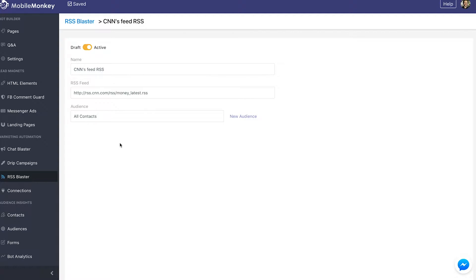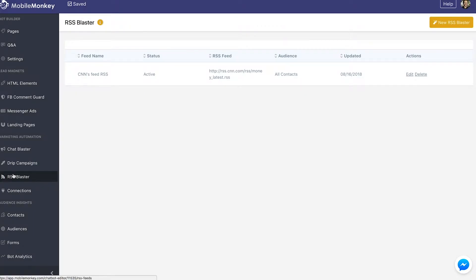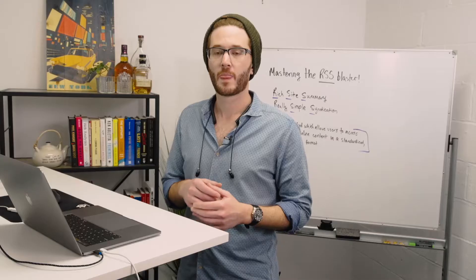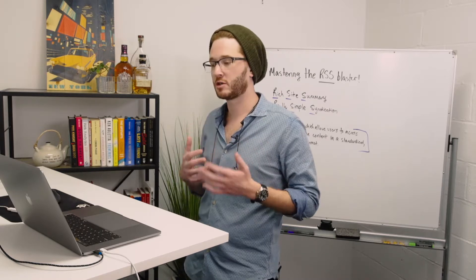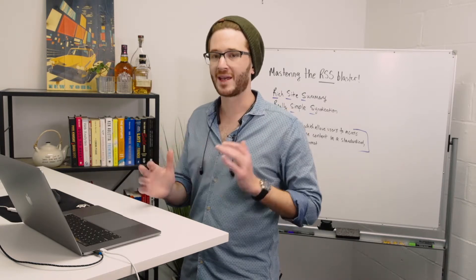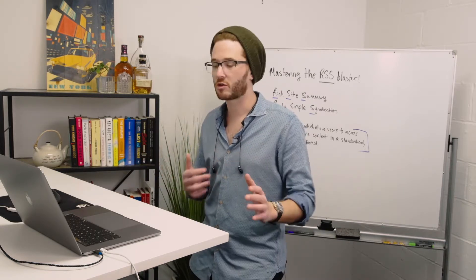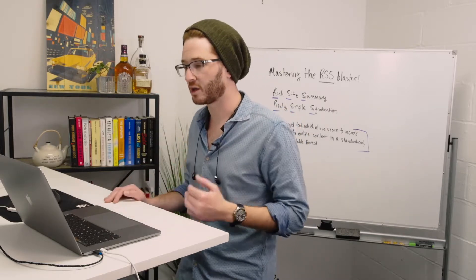And that's all you need to do. Now it's saved and done. You can go back to your RSS Blaster and see that CNN's Feed RSS is now active. The way this works is RSS feeds in MobileMonkey will be updating every 15 minutes or so. There's no way to make it happen faster or slower — it happens on the regular RSS feed schedule.